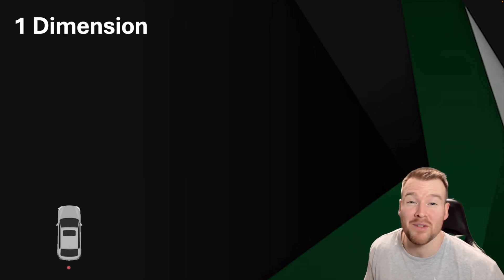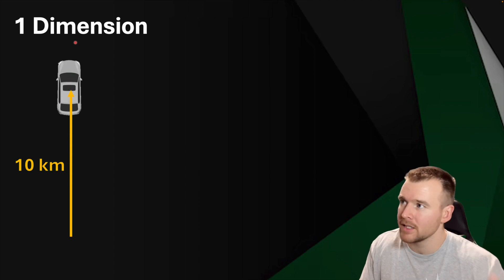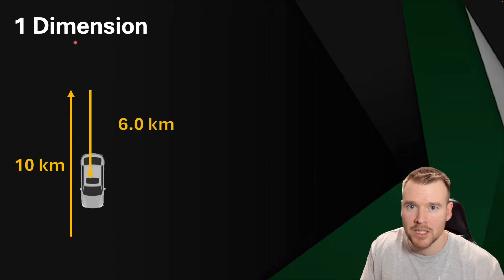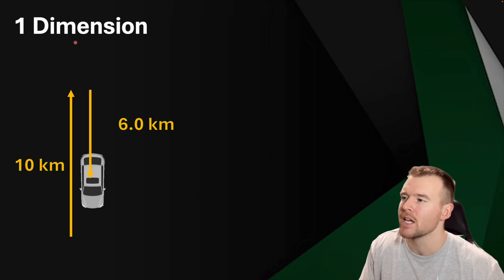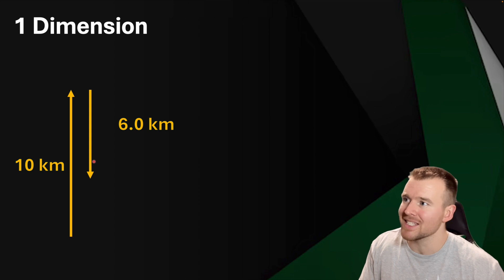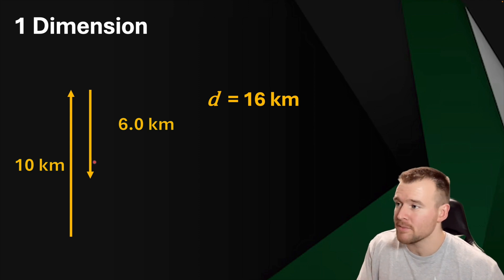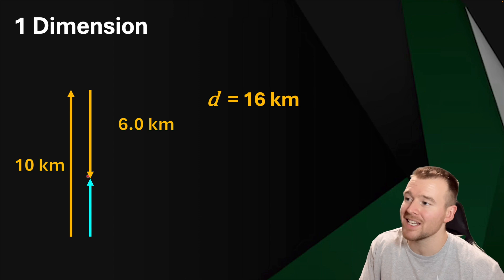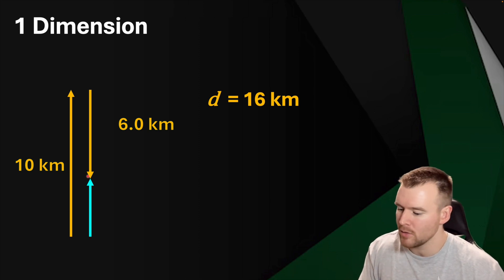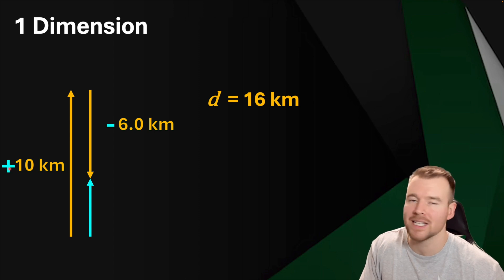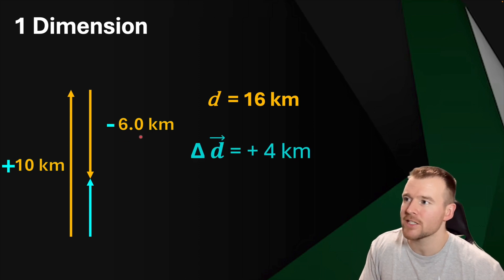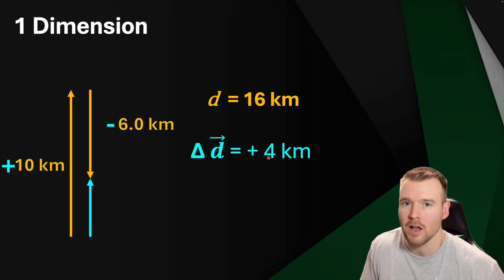Let's look at examples calculating distance and displacement, starting with one dimension. The car goes 10 km up and then turns around and comes back 6 km. Distance: you just add those together — 10 plus 6 equals 16 kilometers. For displacement, we go from where we started to where we ended up. Calling up positive: positive 10 and minus 6 gives us a positive 4 kilometers displacement. Or in cardinal terms, 10 kilometers north and 6 kilometers south gives us 4 kilometers north as our overall displacement.